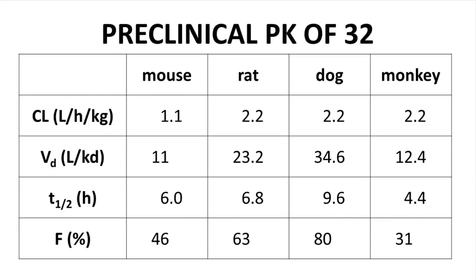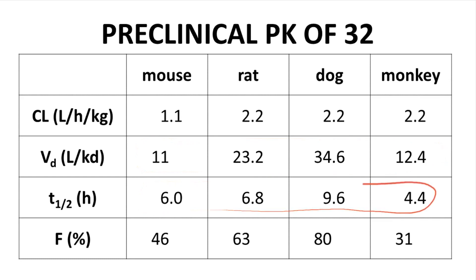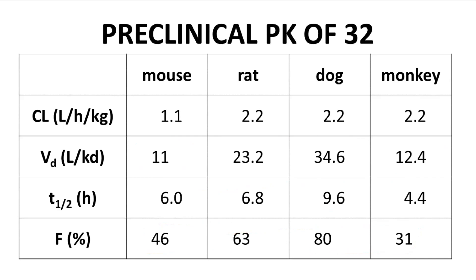The preclinical PK of compound 32 was very promising across all four common species. Like many basic amines, 32 has a high volume of distribution, which contributes to a longer half-life. Perhaps most surprising is the relatively encouraging oral bioavailability. Compound 32 has a high efflux ratio, which can impair absorption; however, efflux transporters in some cases can be saturated, which minimizes the impact of efflux. That may be the situation with compound 32, because oral bioavailability is fine.